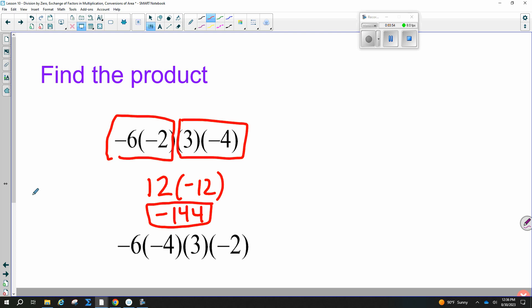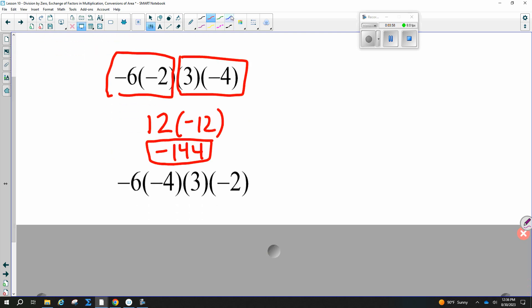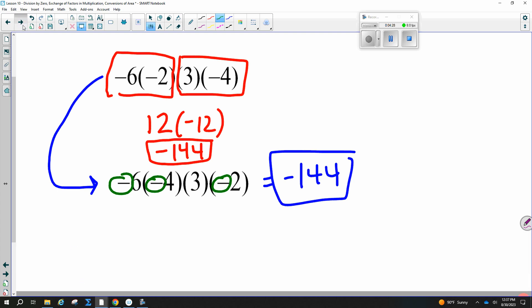Now I have this one. What do you notice about this problem compared to the last problem? Yeah, it's the exact same thing. I have a negative six, a negative four, a positive three, and a negative two, right? They just switched the order around. So what is the answer? Yep. One thing you might want to check, too, is how many negative signs did we have? So a negative times a negative times a negative is a negative. If you have an odd number of negatives, you should get a negative answer just to make sure you're checking that.